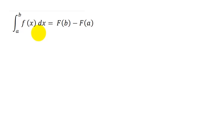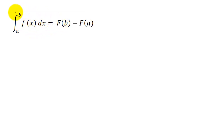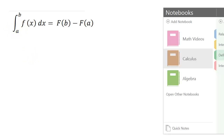Let's look at the definite integral — we integrate f of x with respect to x and evaluate it from a to b. When we do that, we take the anti-derivative of f of x, which gives us capital F of x, and it's the anti-derivative evaluated at the upper limit minus the anti-derivative evaluated at the lower limit.